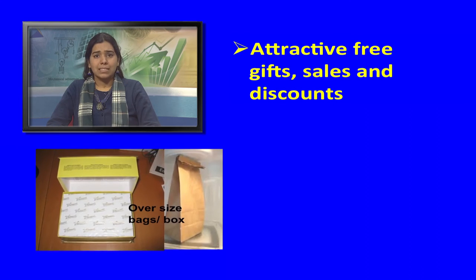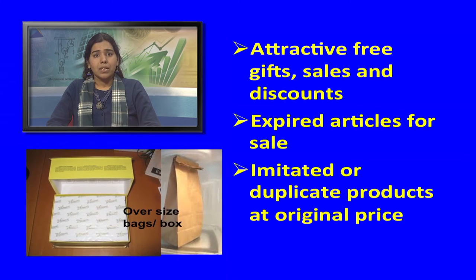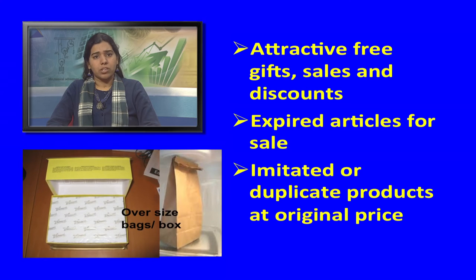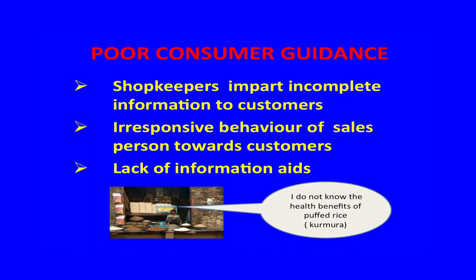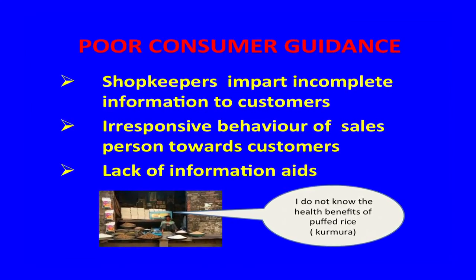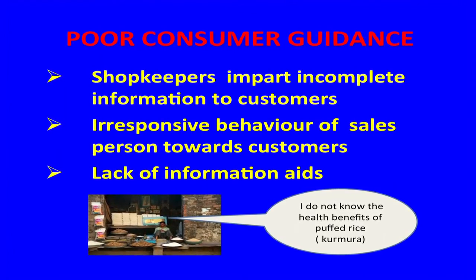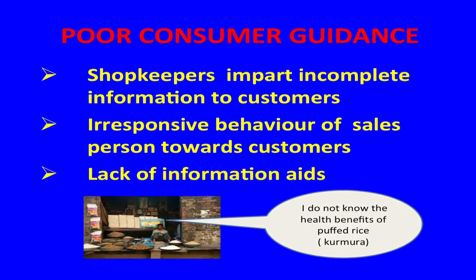Deceptive use of brand names, labels, and packaging are other examples of deceptive trade practices. Measures to attract customers through deceptive means include attractive free gifts, fake sales and discounts, expired articles for sale, and imitated or duplicate products sold at original prices. Poor consumer guidance — lack of awareness among consumers — enables shopkeepers to exploit customers by imparting incomplete information.